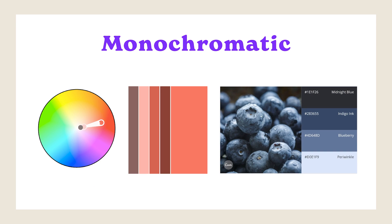Now let's talk about some color combinations. There are several ways to combine colors to create visual harmony. Monochromatic color schemes are based on a single color and utilize different shades and tints of that color to create a harmonious and unified look. This color scheme lacks contrast but often results in a clean and polished aesthetic. One advantage of a monochromatic scheme is its flexibility in adjusting the darkness and lightness of the chosen color. For example, a blueberry-inspired template uses blues and purples to create depth and contrast while remaining cohesive.